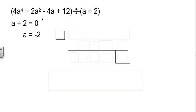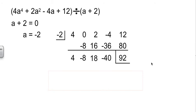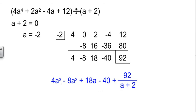Let's try another one. Again, we skipped over a power, so just like before we put a 0 in place for the missing cubed term. A equals negative 2 goes in the box. Bring down the 4, then multiply, add, multiply, add, multiply, add, multiply, add. We have our list of values. We were A⁴, so now we become A³: 4A³ minus 8A² plus 18A minus 40, plus our remainder over what we divided by.